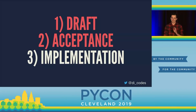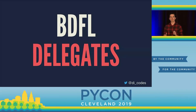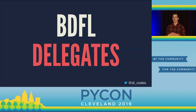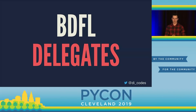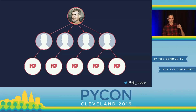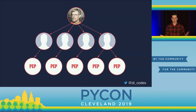Instead, we have what we call BDFL delegates — people that Guido has entrusted to make decisions about the language, either because they know more about a certain area, or because he thinks they're better stewards of it. For example, packaging stuff — he thinks other people can make that decision better. So the flow of power is: Guido gives power to BDFL delegates, who can then approve or reject PEPs and change the language. Sometimes Guido is also still accepting PEPs himself.